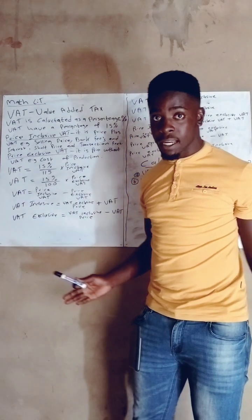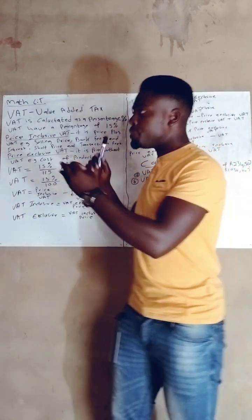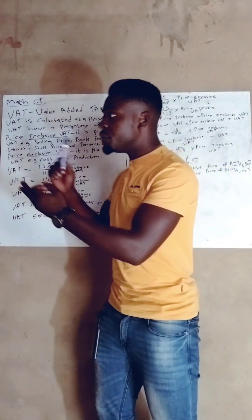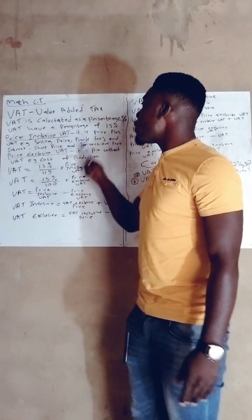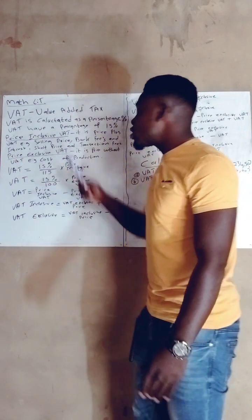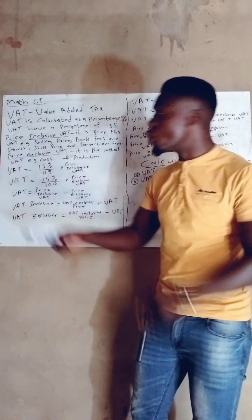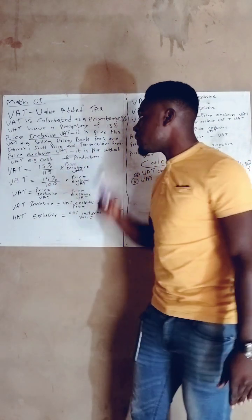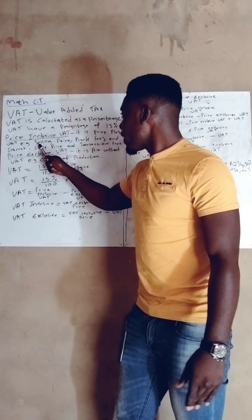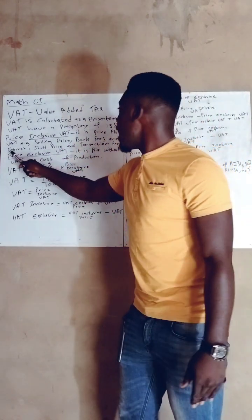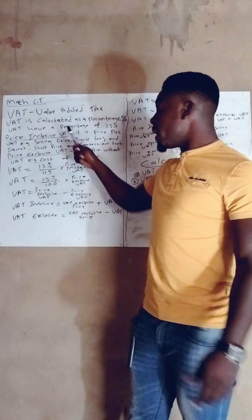So those are the things we should know: VAT is Value Added Tax, it is calculated as a percentage, and that percentage is 15%. Now let us move to VAT inclusive and VAT exclusive. We have to know the difference between a price exclusive of VAT and a price inclusive of VAT. Price inclusive of VAT includes the selling price, bank fees, interest, and transaction fees.